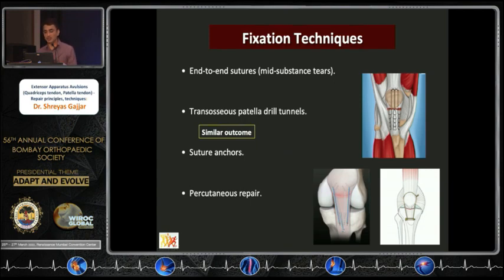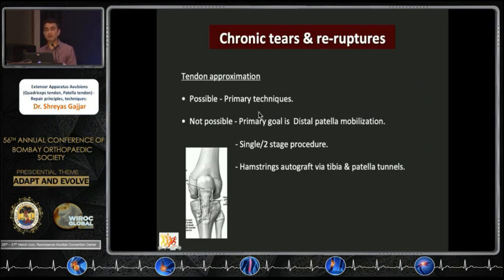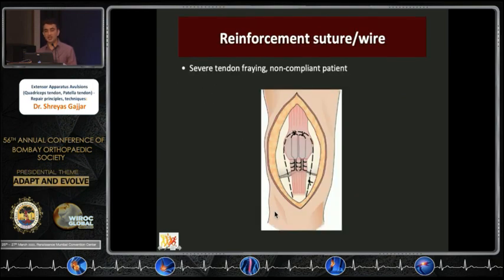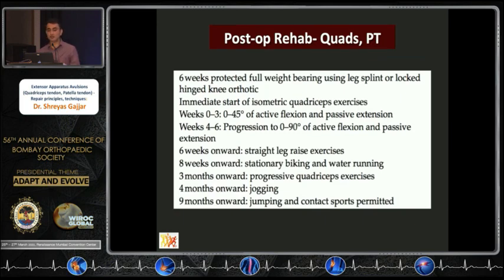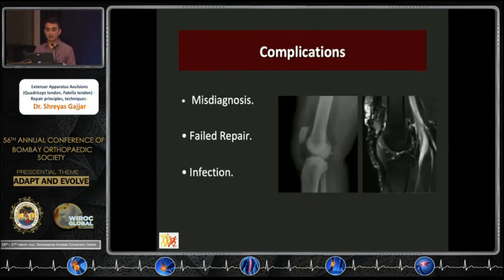For chronic and re-ruptures of the patellar tendon, aim for primary repair if approximable; if not, the patella must be mobilized distally, which remains challenging. This can be done in single or two stages. Hamstring autografts via patella and tibial tunnels are commonly used, and a reinforcement suture can be applied. Post-operatively, six weeks of protected weight-bearing in a brace is followed by isometric quadriceps exercises between zero and three weeks, progression of flexion to 45 then 90 degrees, with sporting activities generally starting after four months and contact sports permitted at nine to twelve months.